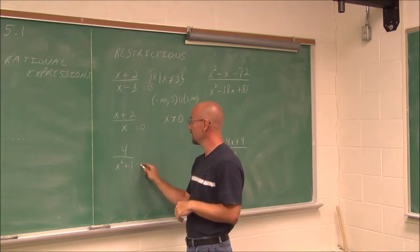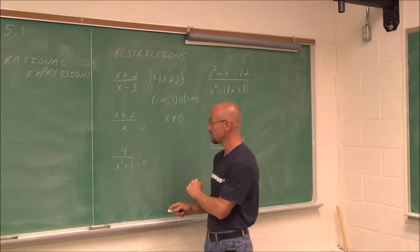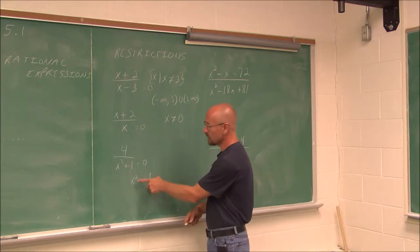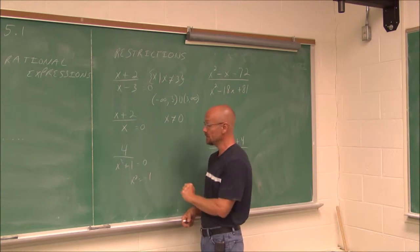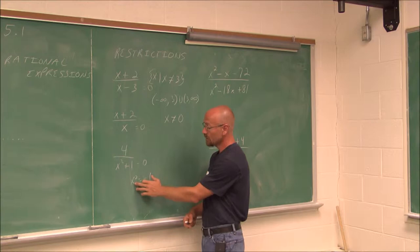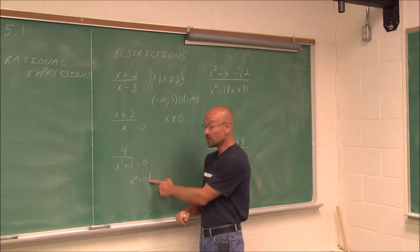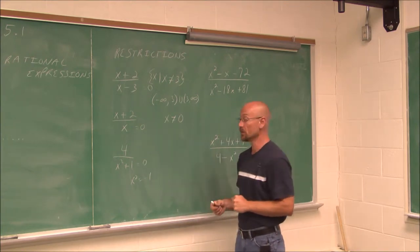Here we have 4 over x squared plus 1. If we set the denominator equal to 0 and subtract 1 from both sides, there is no real value squared that would give me a negative — a negative times a negative is positive, and a positive times a positive is positive. So there is no real value that makes this equal to negative 1, meaning there are no restrictions. We can use any real number.